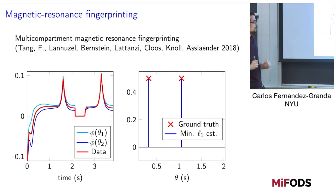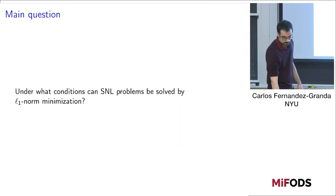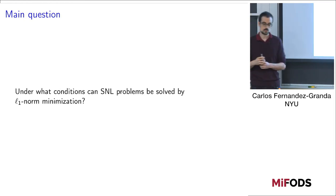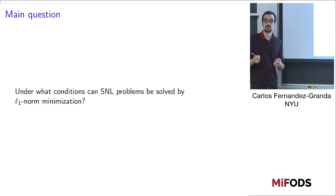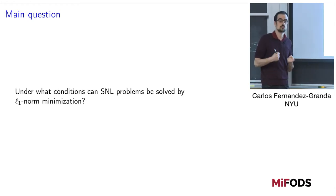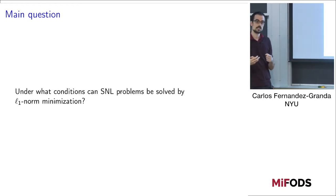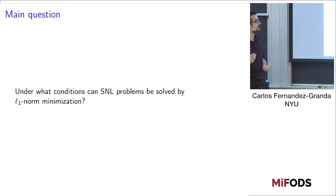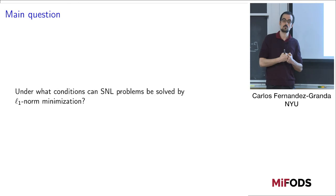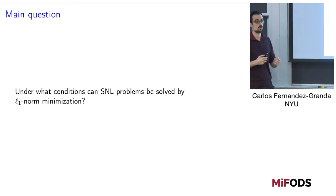The point is that even though we observe in many applications that L1 norm minimization methods are quite effective, the current theory to analyze these methods does not really apply, because most of it is focused on randomized measurements, which are not relevant to the applications I just described. That is basically the main motivation of this talk: to develop a theoretical framework to understand when this approach is going to work.